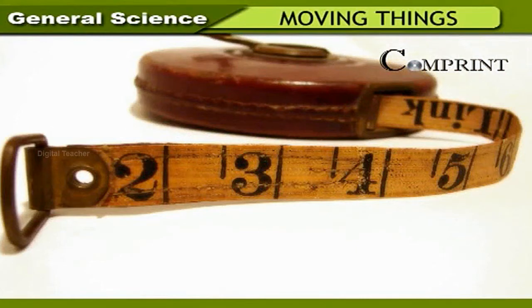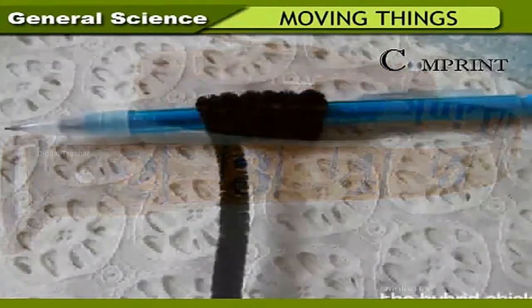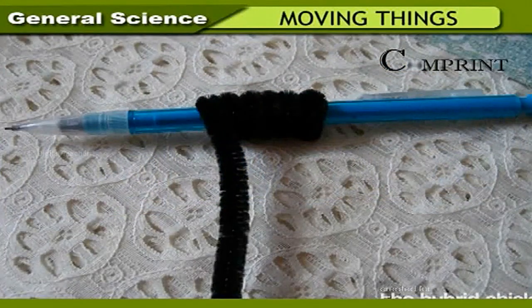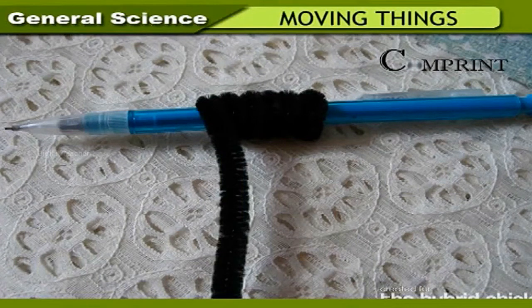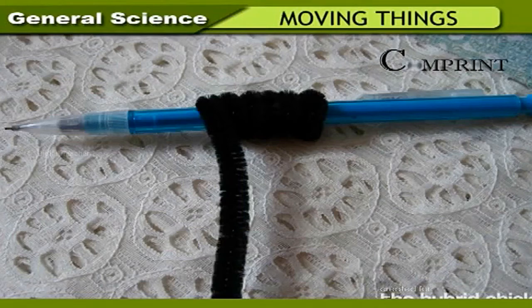We cannot measure curved surfaces like edges of glass, circumference of a bangle, and cylindrical box with a scale. These can be measured by twine, and the twine can then be measured with a scale. By using this method, we can measure the circumference of any curved surface.